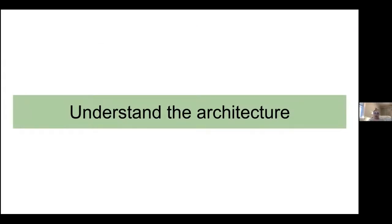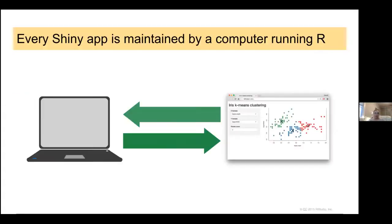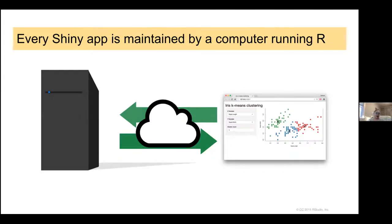To get started, the first thing we need to do is understand the architecture of a Shiny app. Every Shiny app is maintained by a computer running R. Before you put it on the web, your Shiny apps are just going to live on your laptop. Basically what we have is a laptop that talks to a user interface that looks like a webpage. The user inputs into the user interface, that information goes back to the computer, and then the computer makes a new plot. At the end, I'll show you how to get your Shiny app on a server, which is another version of the computer running the R code behind your Shiny app — that's how they can be disseminated to the broader public.